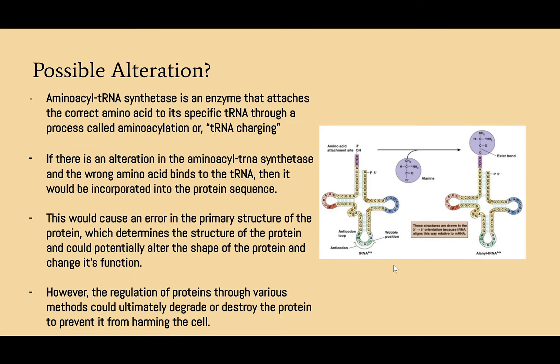Aminoacyl tRNA synthetase is an enzyme that attaches the correct amino acid to its specific tRNA through tRNA charging. If there was an alteration in the aminoacyl tRNA synthetase and the wrong amino acid was bound to the tRNA, it would be incorporated into the protein sequence. This would cause an error in the primary structure of the protein and could potentially alter the shape and function of the protein. However, regulatory mechanisms could ultimately degrade or destroy the protein to prevent it from harming the cell.